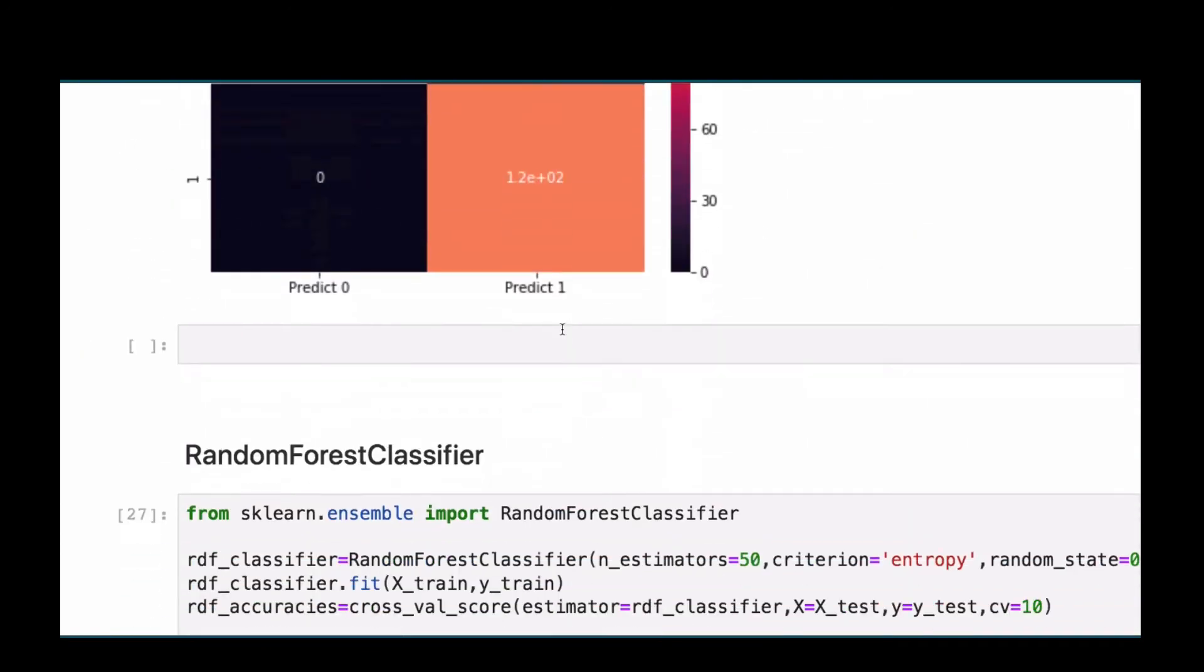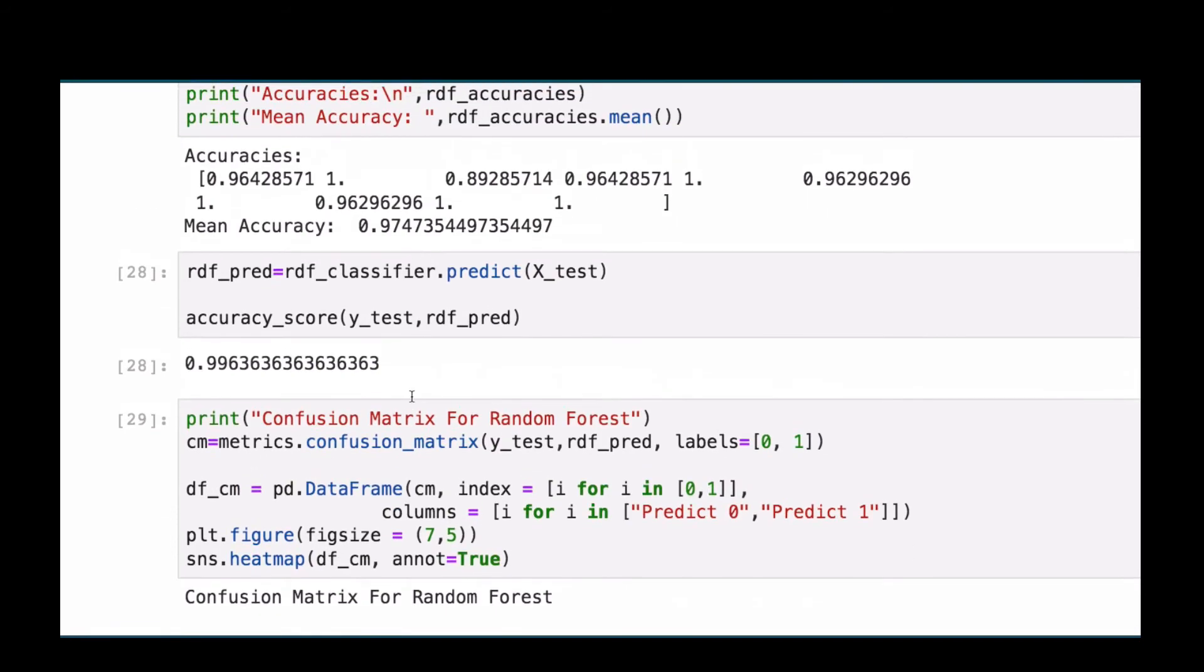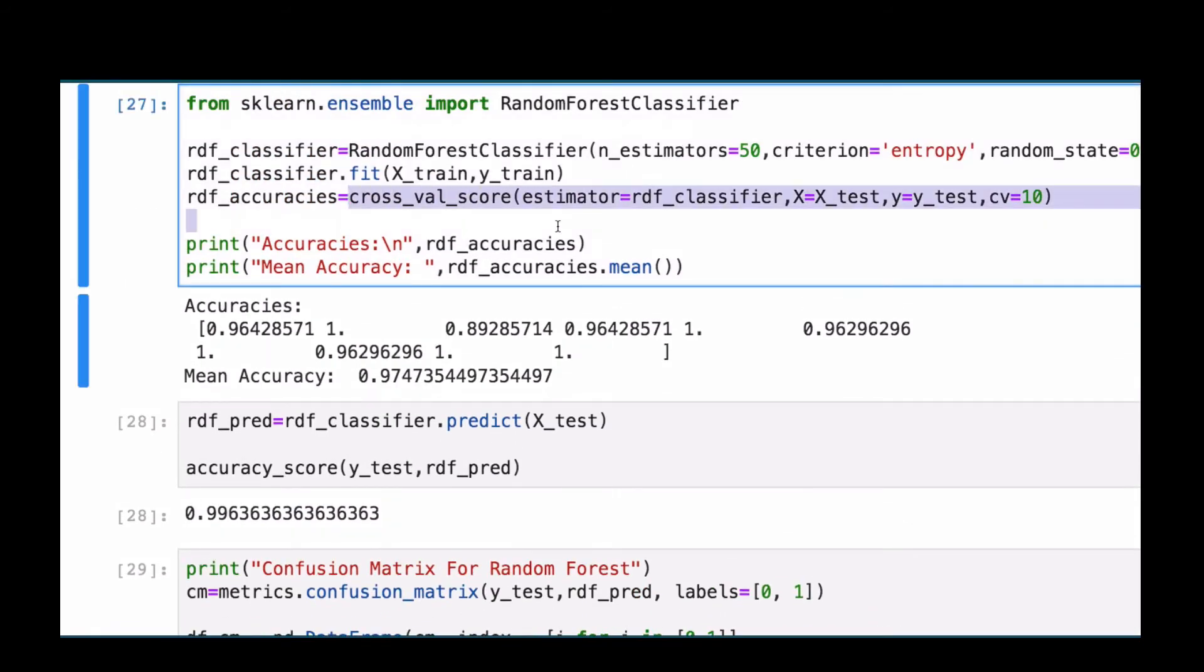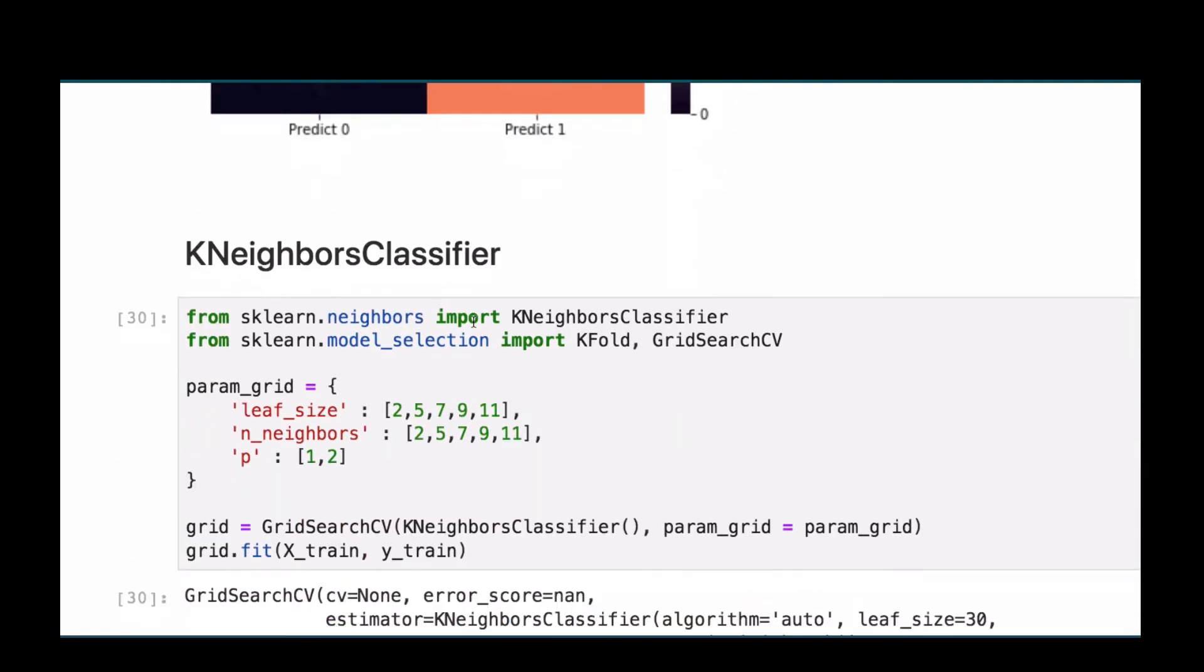Then we will also move on to build a random forest classifier. We also check with the cross-val score of how our model is doing, and we also build a confusion matrix for each of them.